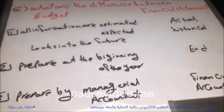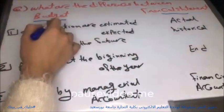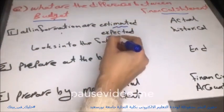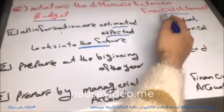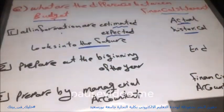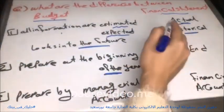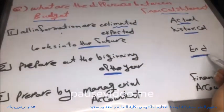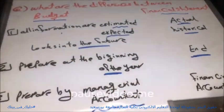What are the differences between budget and financial statement? Budget: all information are estimated or expected — it looks into the future. But financial statement: all information are actual or historical. Budget is prepared at the beginning of the year, but financial statement is prepared at the end of the year. Budget is prepared by a managerial accountant, but financial statement is prepared by a financial accountant.